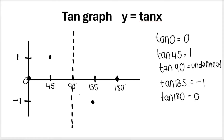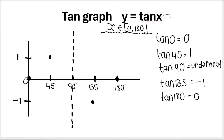So what I should say is that this is a tan graph, y equals tan x, where x is an element of 0 to 180. But remember, we can ask you to plot tan graphs from 0 to 360, or negative 360 to positive 360 — it just depends on the question. So this is the domain, telling me that I'm plotting from 0, including 0, to 180. My graph is going to stop here, although in reality it can continue.